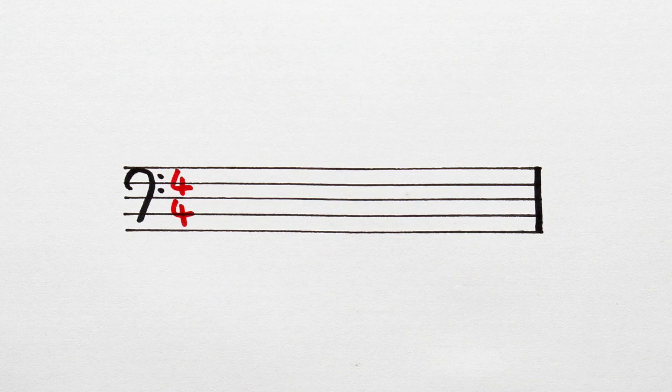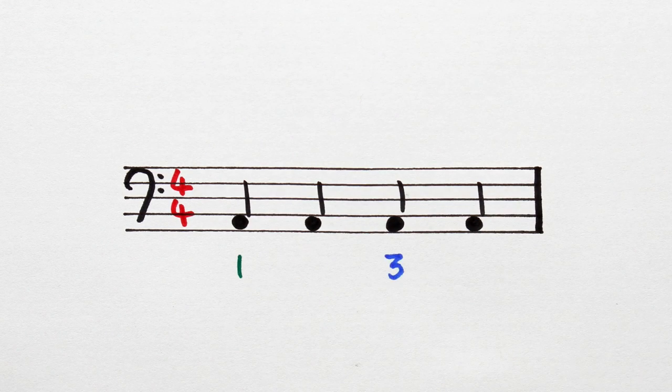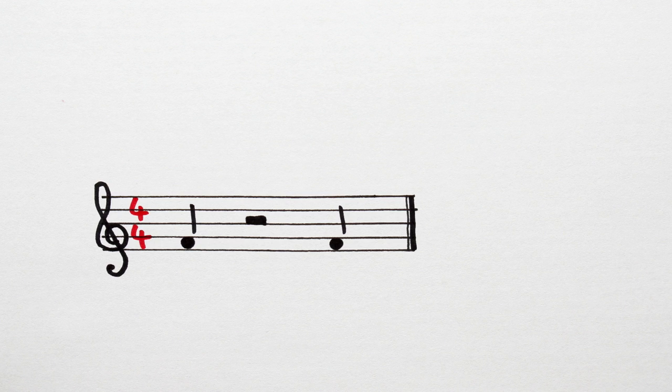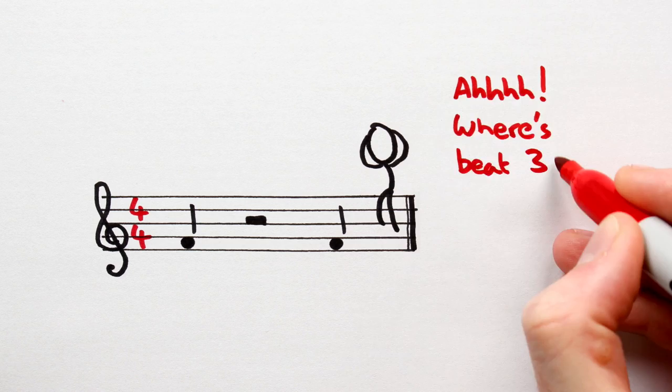Why? Because in 4-4 time, beats 1 and 3 are the strong beats. And we want to, at a glance, be able to see where they are. This confuses my brain.